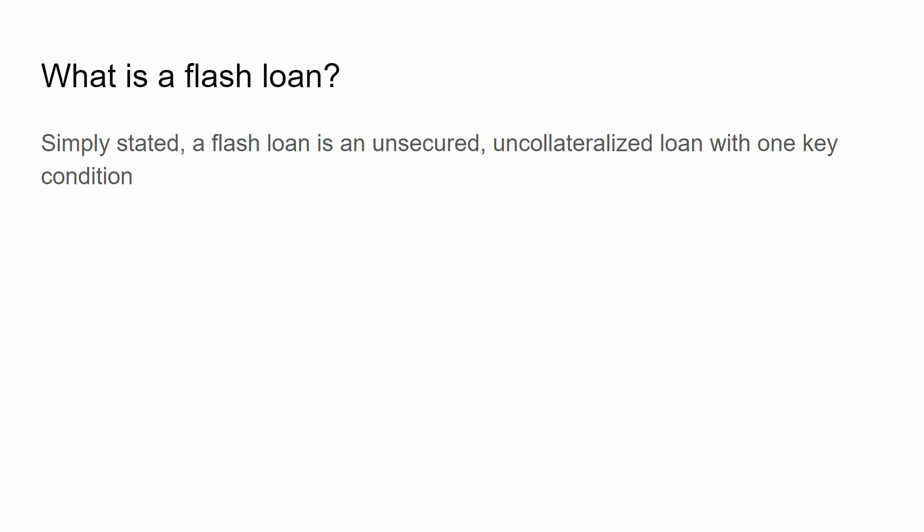But what is a flash loan exactly? In its most basic form, a flash loan is a loan given to an individual or an entity that is completely uncollateralized — there's no collateral, no backing for this loan — and it comes with one key condition. We can take a bird's eye view and look at it as consisting of three major steps.